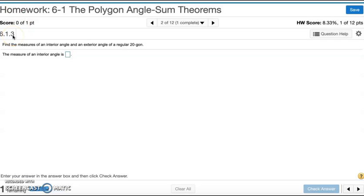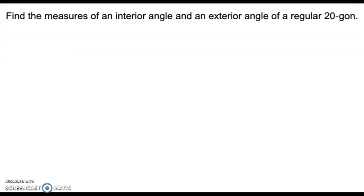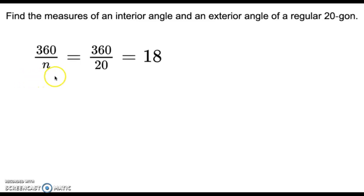Number two: find the measures of an interior angle and an exterior angle of a regular 20-gon. To find the exterior angle, you simply divide 360 by the number of sides. So 360 divided by 20 is 18. The measure of one exterior angle of a 20-gon is 18 degrees.